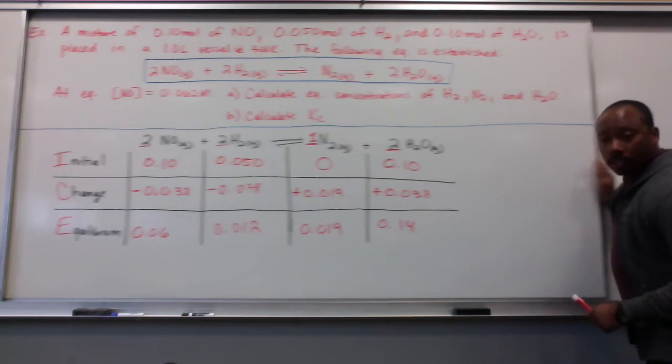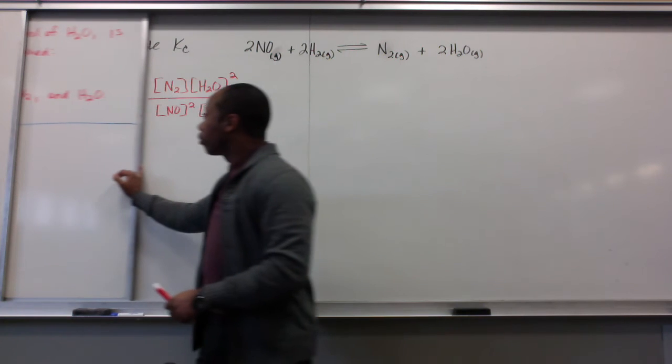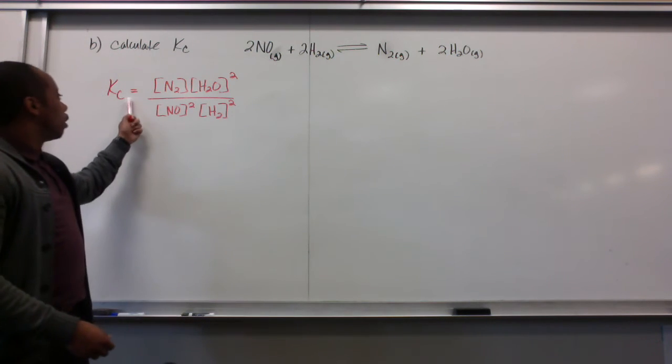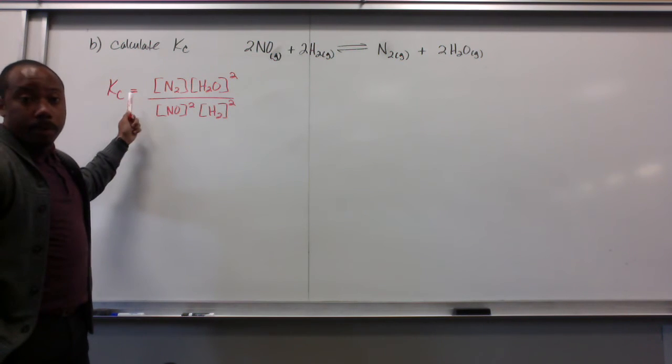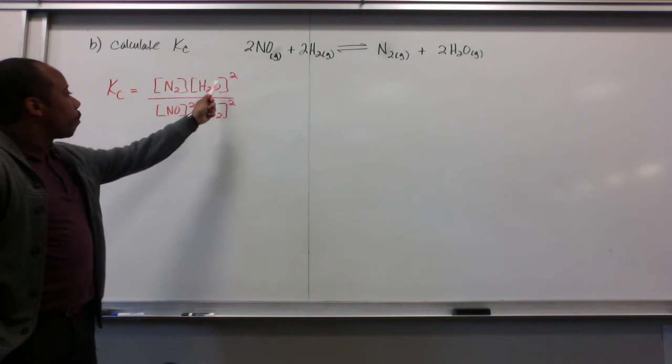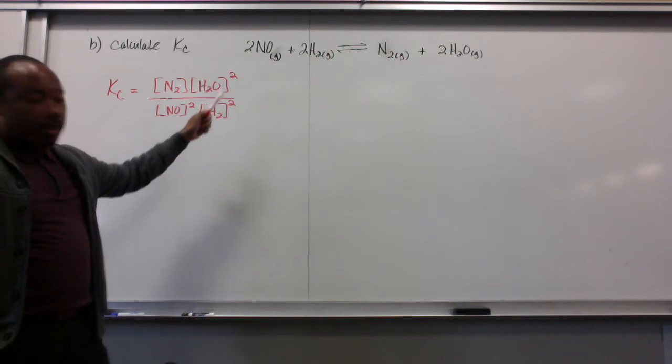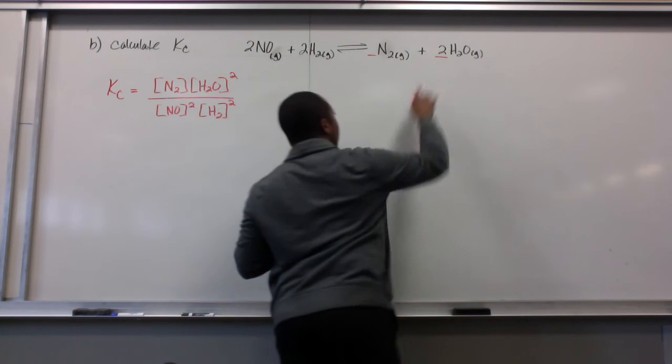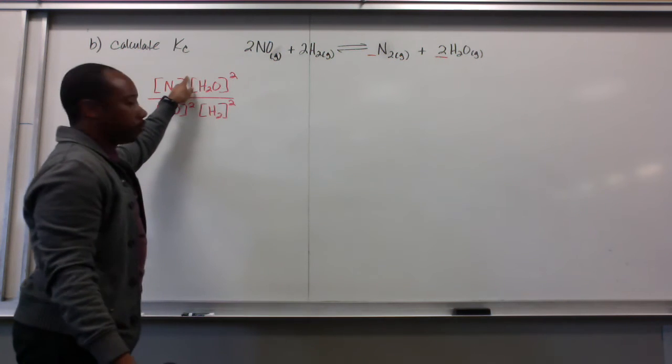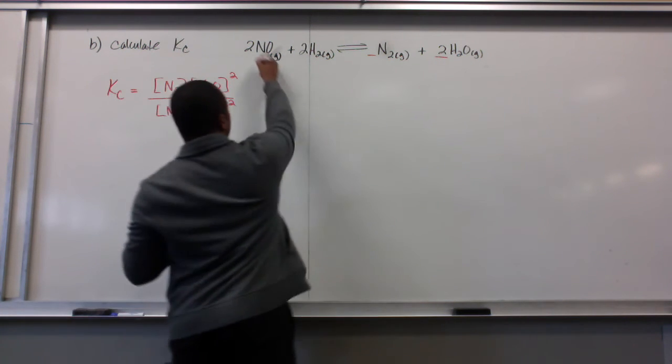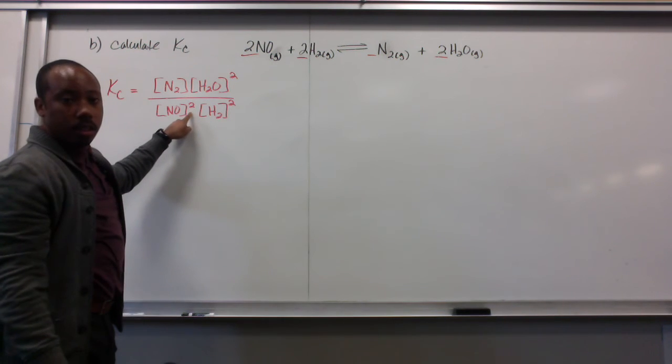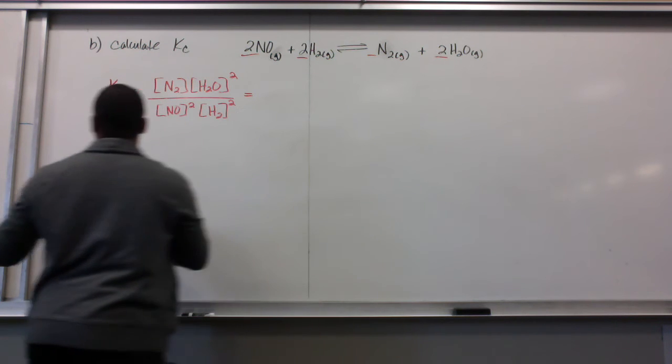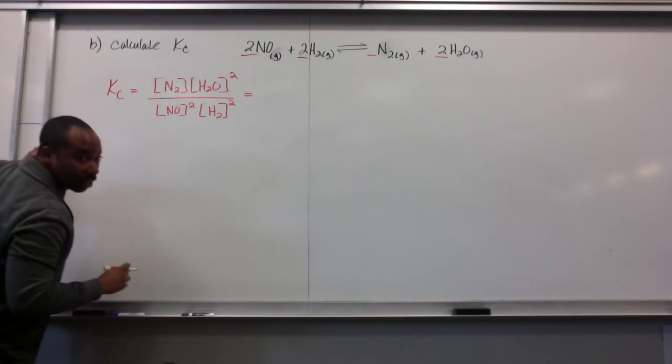We know that Kc as an equilibrium expression is our products over our reactants. Our products, we have to incorporate the coefficients here as powers. And the same for our reactants. And now, we have to plug in our values.